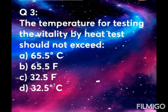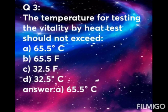Question 3: The temperature for testing vitality by heat test should not exceed — Option A: 65.5 degree Celsius. Option B: 65.5 Fahrenheit. Option C: 32.5 Fahrenheit. Option D: 32.5 degree Fahrenheit. The answer is 65.5 degree Celsius. The hot gutta-percha used in the heat test has a temperature of more than 65.5 degree Celsius.